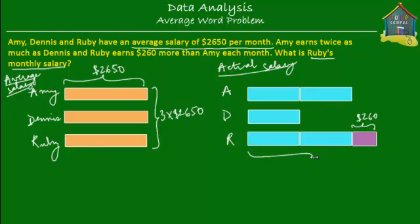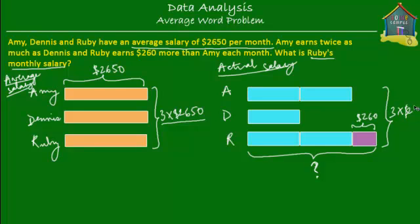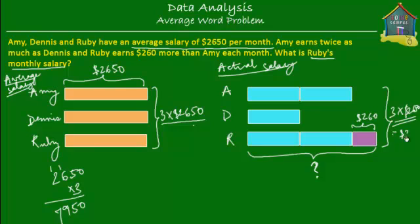Can we find out what Ruby's salary is? Yes, because we know the total salary that these three people make. When we replace the actual salaries by the average salaries, the total remains unchanged. So the total salary, taking the average into account, is 3 times $2,650, and the total using actual salaries will also be 3 times $2,650. That equals $7,950.